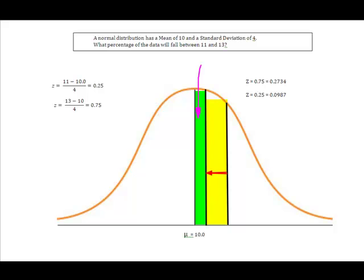Then what I've got to do is I've got to subtract out this green area. I've got to get rid of it, because it was counted once in this 27.34%, and again in this 0.0987%.